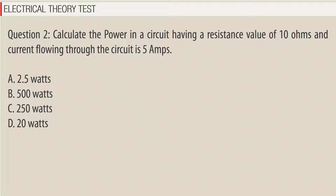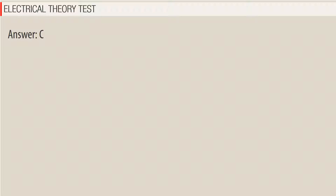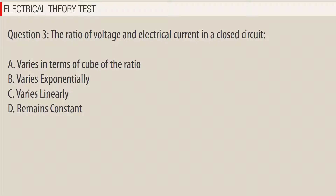Question 2: Calculate the power in a circuit having a resistance value of 10 ohms and current flowing through the circuit is 5 amps. a) 2.5 watts, b) 500 watts, c) 250 watts, d) 20 watts. Answer: C.